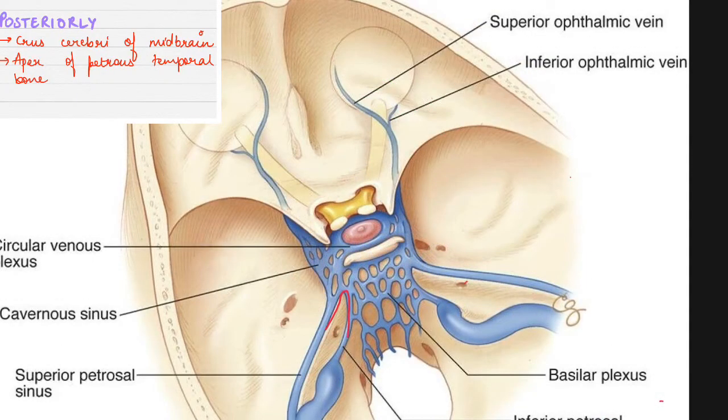And posteriorly, we have the apex of the petrous temporal bone and the crus cerebri of the midbrain.